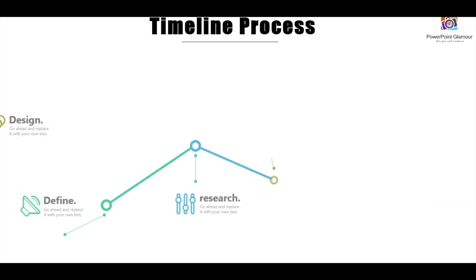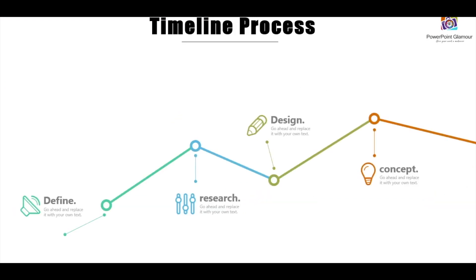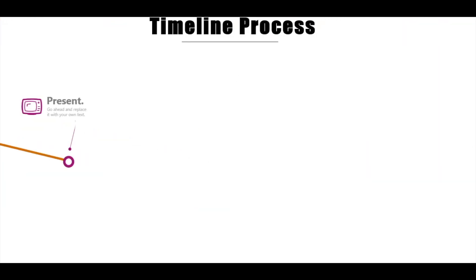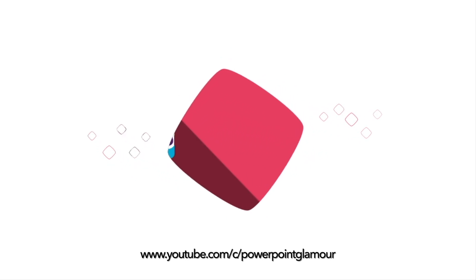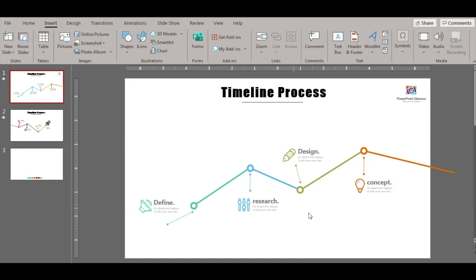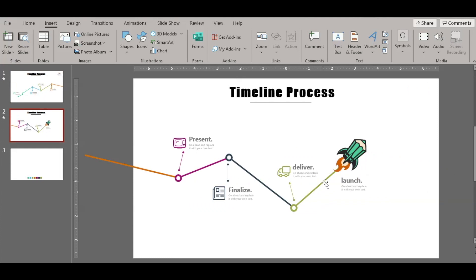Hi guys, welcome back to PowerPoint Glamour. Today let's check out how to make this simple timeline process in easy steps. If you have a look here, it's a simple timeline process spread across two slides. We have used shapes which are circles and straight lines of different colors. This is a timeline process of a project: it starts with Define, Research, Design, Conceptualize, Present, Finalize, Deliver, and Launch.